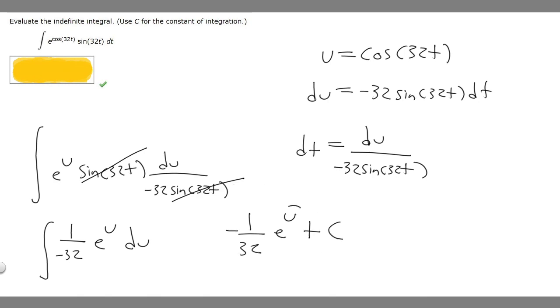So what we've got to do now is just replace u with what we chose u to be. And that's going to be our final answer. So minus 1 over 32 times e raised to the u, so raised to the cosine of 32t, and then plus C. And so this right here is going to be our final answer.